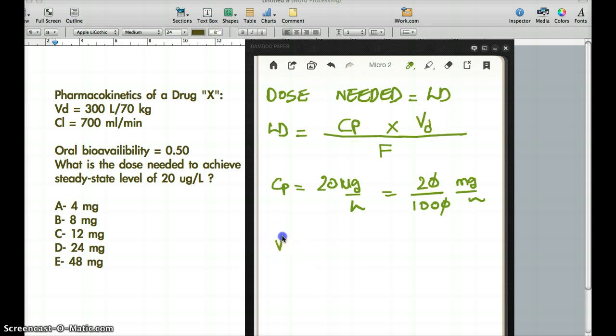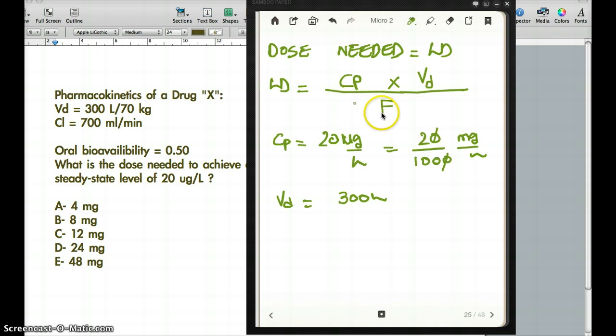So what about VD? VD is our 300 liter per 70 kg. We don't have to worry about the 70 kg. And bioavailability, F is going to be 0.5. So we're going to plug in the values here.